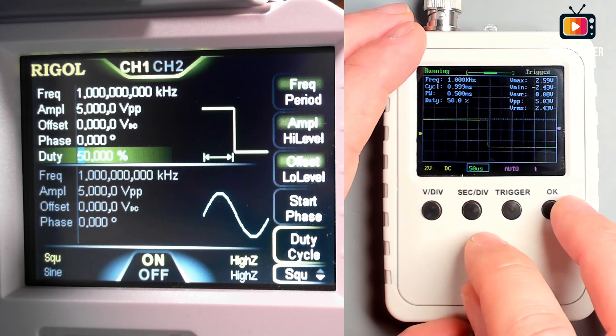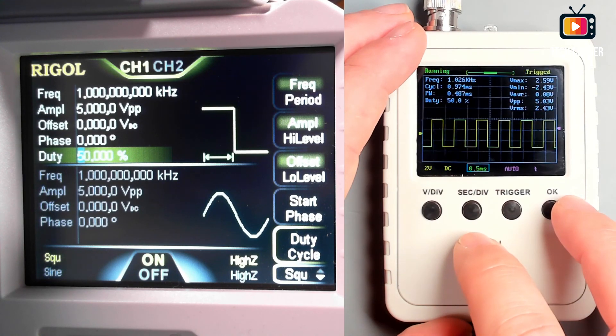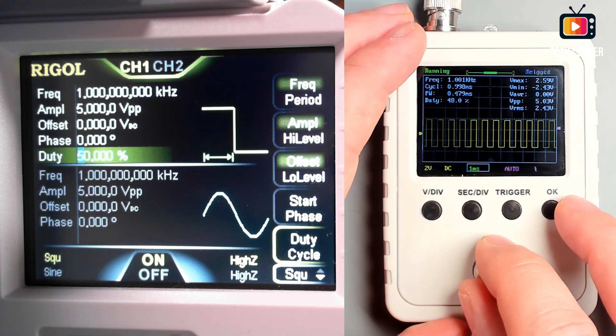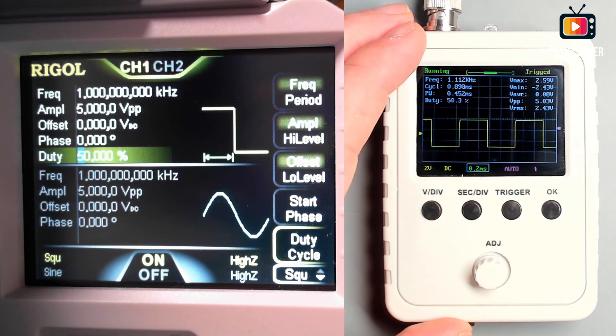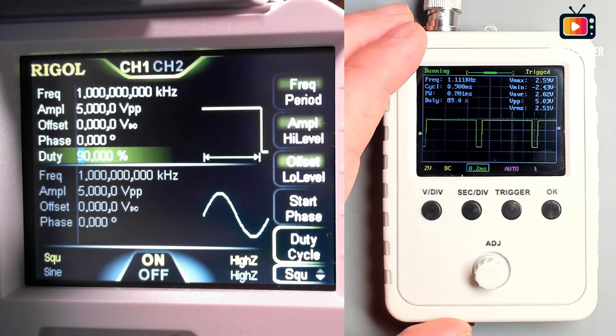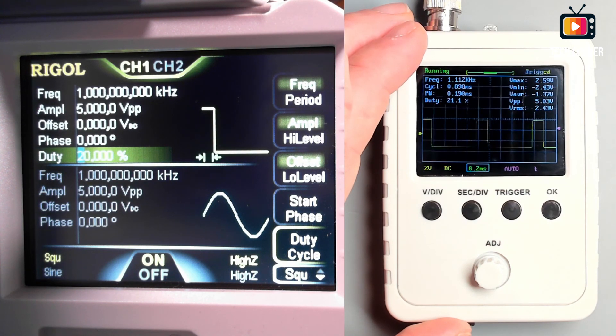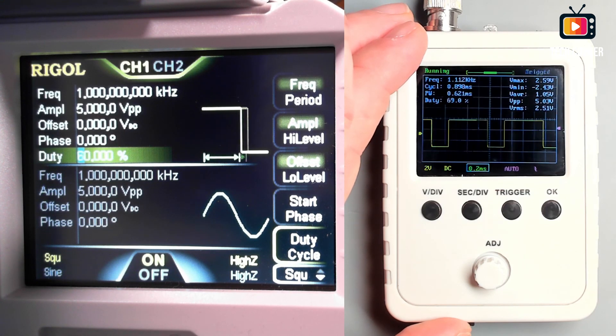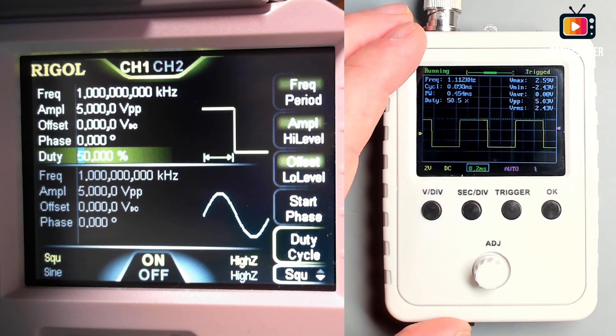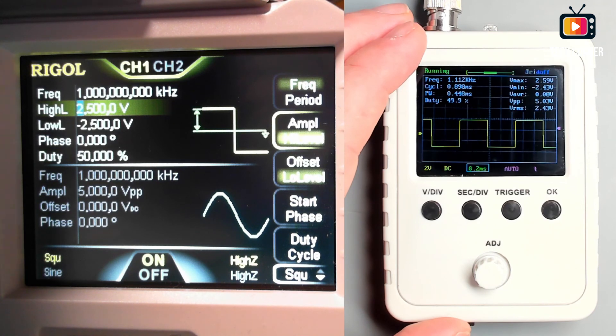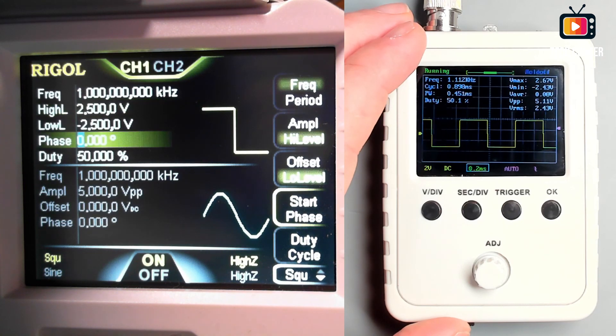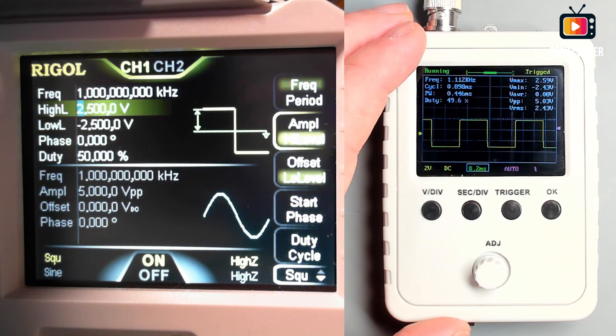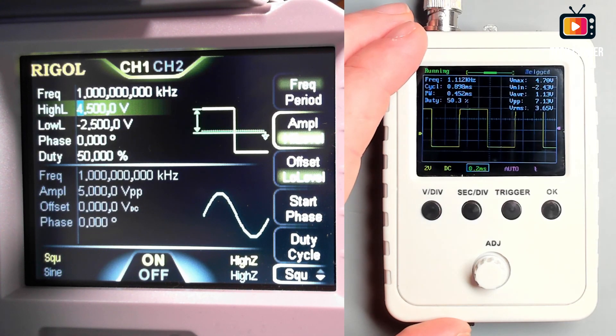So let's try now a square wave. Obviously, the signal from the function generator is quite good. But you can see that you have here a very good square wave. The response time is quite good, as you can see. So I'm quite happy with this, to be honest. You don't see here any jitter on the signal. The corners of the square wave are 90 degrees without deformations.